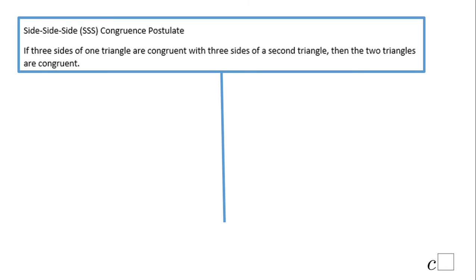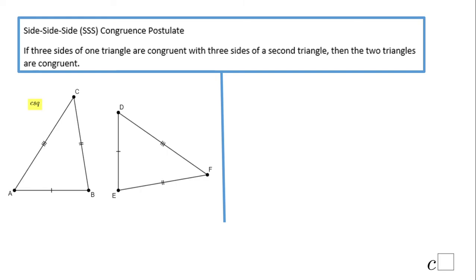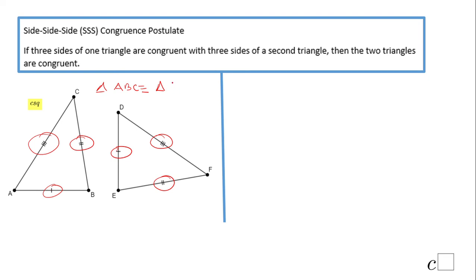The first choice is the Side-Side-Side congruence postulate. If we have three corresponding congruent sides — this side congruent to this one, this side congruent to this one, and this one congruent to this one — then the triangles are congruent. In this case, triangle ABC is congruent to triangle DEF. You need to be careful to write the correct congruence statement.